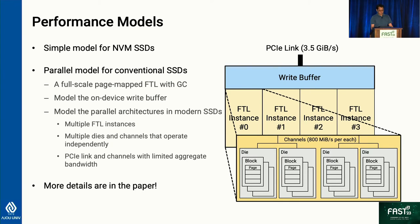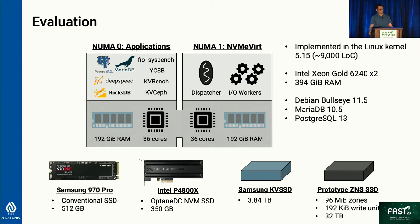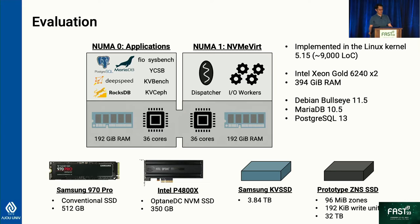This implementation amounts to about 9,000 lines of Linux kernel code. We evaluated it using a NUMA machine, running the application on NUMA node 0 and the emulator dispatcher and IO workers on the other processor so they do not interfere. We used four real devices for evaluation: the Samsung 970 Pro as the conventional SSD, the Intel Optane SSD as the NVMe SSD, and the Samsung KV SSD and a GNSSD prototype provided by our research partner.